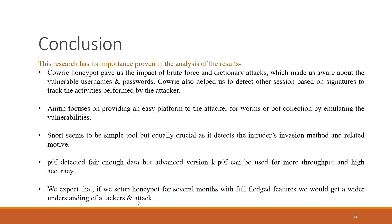For the conclusion: the Cowrie honeypot gave us the impact of brute force and dictionary attacks, making us aware of vulnerable passwords and usernames. Amun focuses on providing an easy platform to the attacker for worm and bot collection by emulating vulnerabilities. Snort seems very simple but is equally crucial as it detects the intruder's invasion method and related motive using its 1,900 configurable stock rules. p0f detected fair enough data but an advanced version can be used for more throughput and higher accuracy. If the honeypot had been set up for several months with full-fledged features, we could have gained a wider understanding of attackers and attacks.